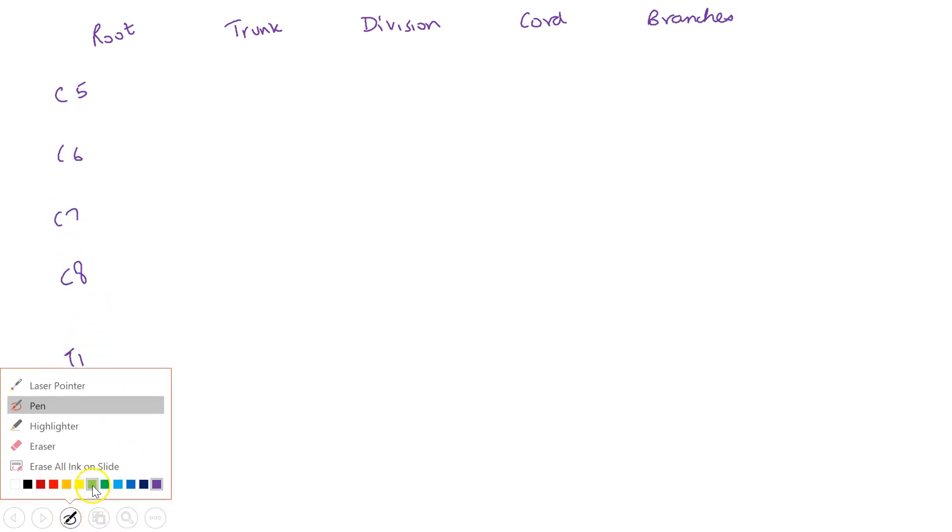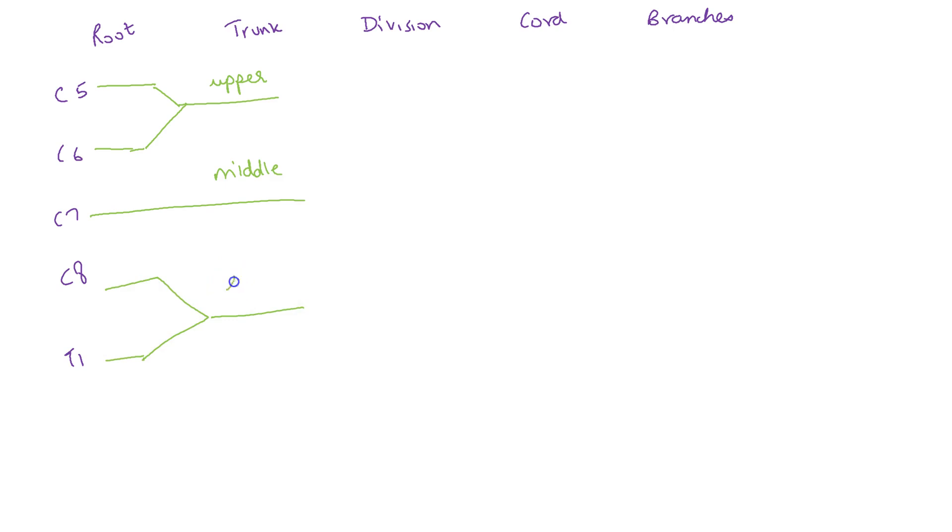So it consists of roots, trunks, divisions, cords and branches. The roots come from the ventral rami of C5, C6, C7, C8 and T1. The ventral rami of C5 and C6 join to form the upper trunk. C7 continues as the middle trunk whereas C8 and T1 join to form the lower trunk.